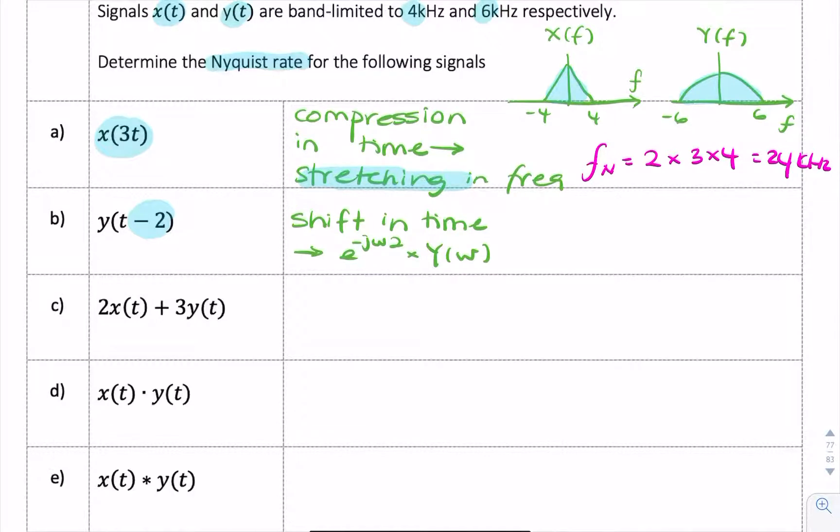That doesn't change the bandwidth, so the bandwidth remains the same. It remains 6 kilohertz, and therefore the Nyquist rate would just be 2 times 6, which is 12 kilohertz.